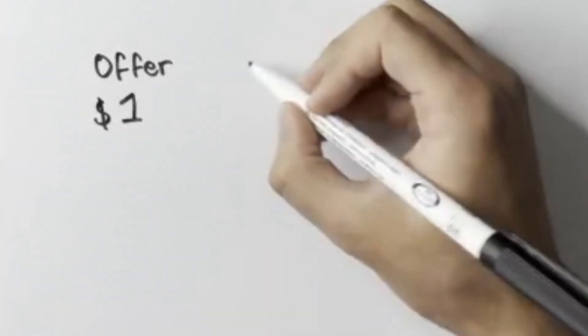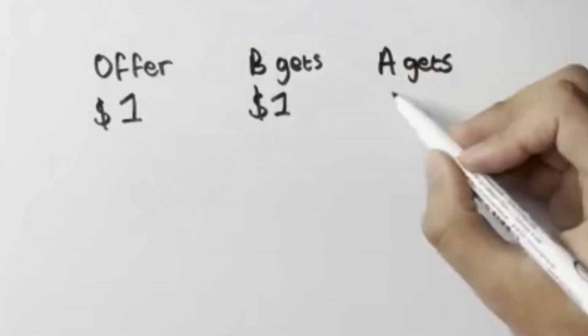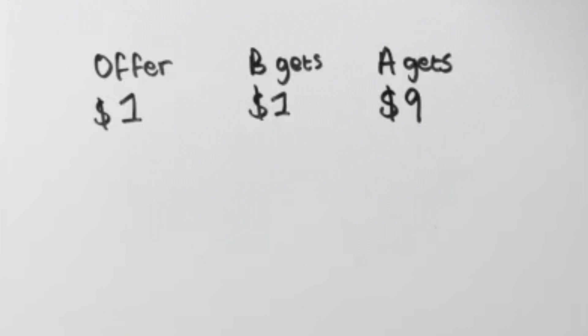Knowing this, the offer you should make, the Nash Equilibrium, is to offer player B $1, therefore keeping $9 for yourself. It's the lowest offer you can make that a rational person will accept. You could make a higher offer but you'll be making less profit. For example if you offered $2 you'd be making a profit of $8 instead of $9. Looking at it this way this seems like a fairly straightforward decision.